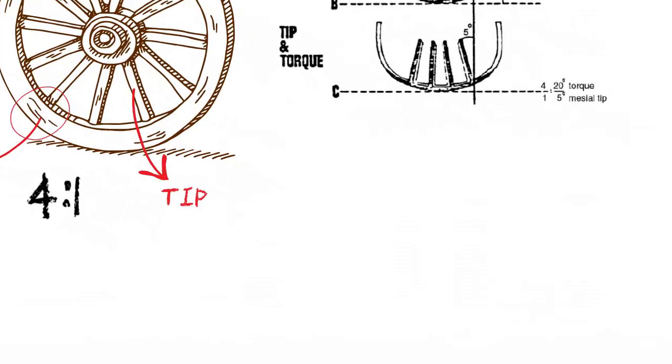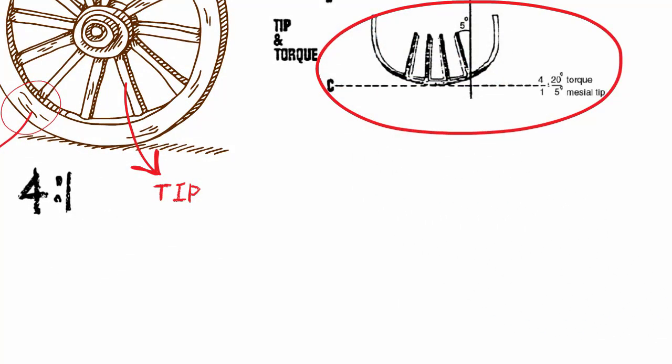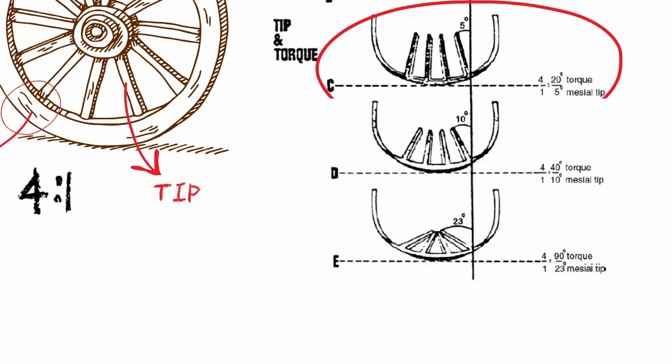For example, the addition of 20 degrees of labial crown torque on the incisors will increase the mesial tip of the roots by 5 degrees. Therefore, always be aware of changes in angulations that may be caused by changes in torque.